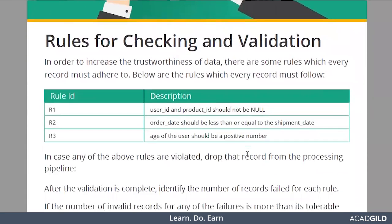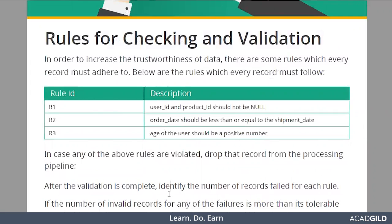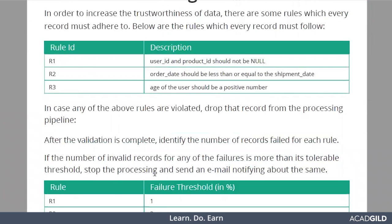There are certain rules for checking and validation that every data must pass. Rule one: user ID and product ID should not be null — applicable for all three data types. Rule two: order date should be less than or equal to shipment date. Rule three: age of the user should be a positive number. If any data violates these rules, it should be dropped and not considered for processing. After validation, we identify the number of records that failed for each rule. If a particular file fails to meet the threshold, it should not be considered for processing.